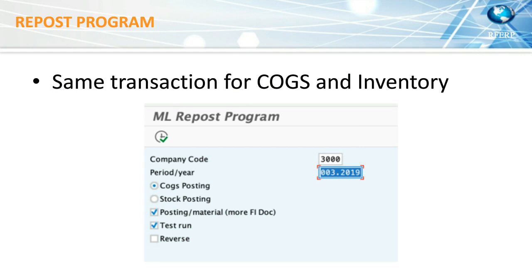The solution is simple to run: you enter company code, the period you want to post, and choose whether to do COGS or stock posting. There is an option to post journal entries by material — if selected, each material creates a separate FI document; if not, values are grouped before posting to SAP. You can also reverse. The system is designed not to post twice in the same period — similar to material ledger closing, you cannot run it twice. If documents exist for the current period, the program will tell you to reverse first.